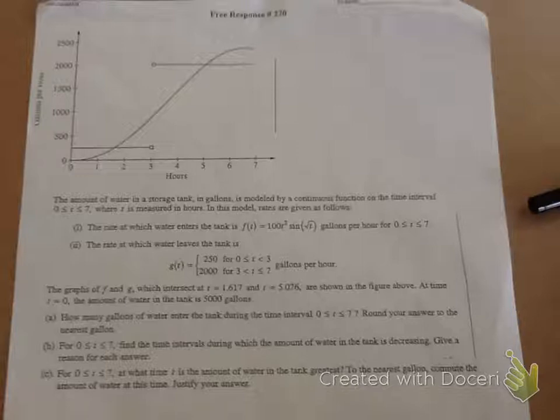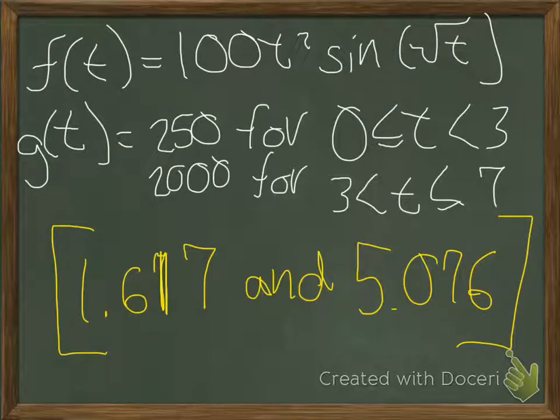The graphs F and G, which intersect at t = 1.617 and t = 5.076, are shown in the figure above. At time t = 0, the amount of water in the tank is 5000 gallons. Let's go on with the questions.